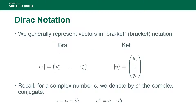The Dirac notation, sometimes called the bracket notation, concerns the following: an input column vector with entries y1 to yn is called the ket. The ket notation is written as |y⟩ with a bar and angle bracket, and it represents the column vector y1 to yn.